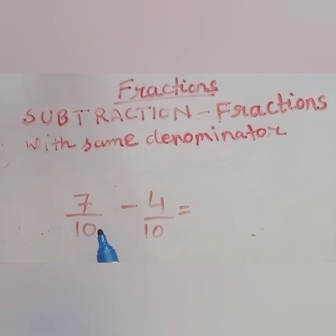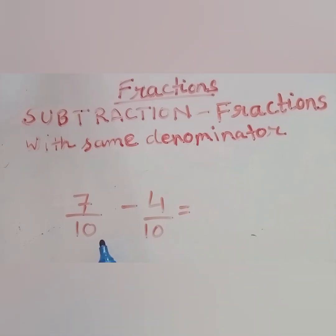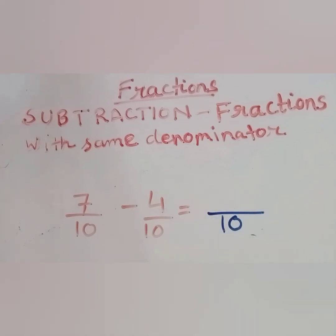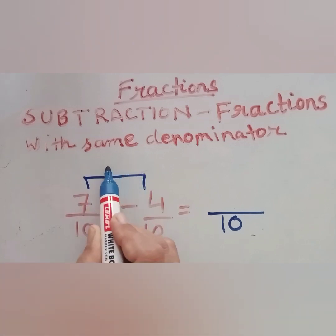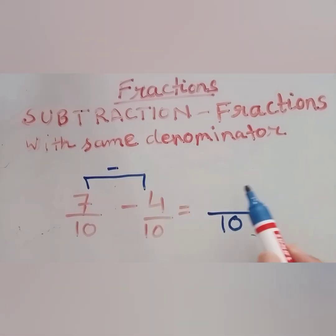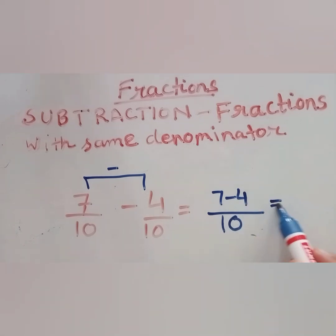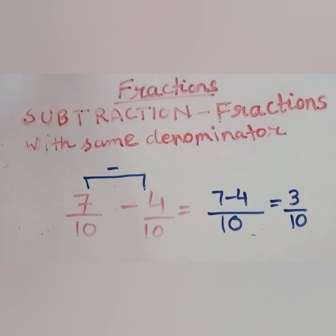Here we can see that the denominator in both fractions is 10. So we will first write the denominator 10, because the base is same. Now we will simply subtract the numerators: 7 minus 4 is 3 by 10. This is the answer.